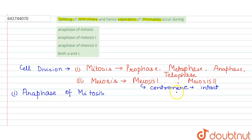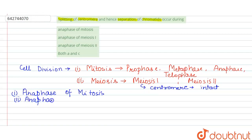In meiosis two, again there is a splitting of the centromere and the separation of the chromatids. So the second process in which it occurs is the anaphase of meiosis two.